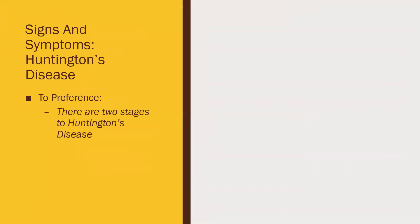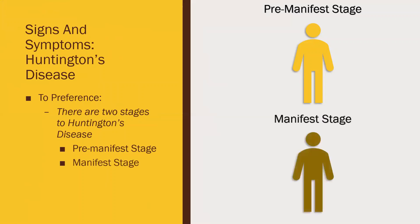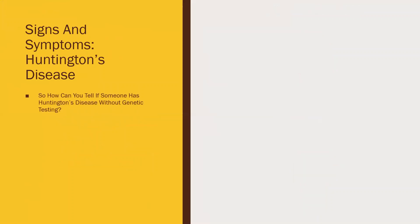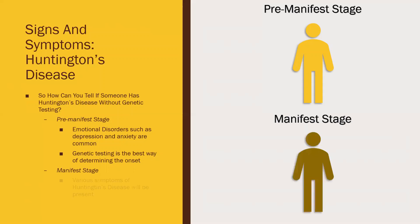There are two stages of HD. The pre-manifest stage is where the individual has the disease but symptoms haven't begun to occur, and subjects are indistinguishable from control subjects in terms of symptoms. The manifest stage is where the disease has occurred. For individuals in the pre-manifest stage, emotional disorders such as depression and anxiety are common, but this doesn't mean HD will occur in other individuals with depression and anxiety. Generally, the only way of determining HD onset in the pre-manifest stage is through genetic testing.